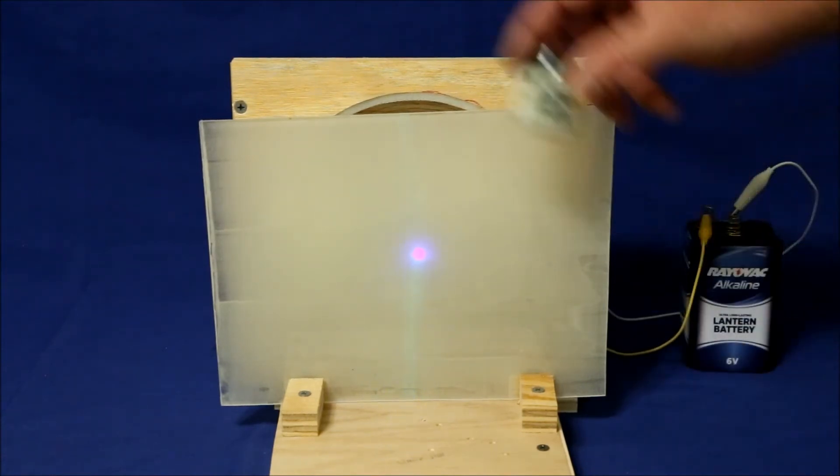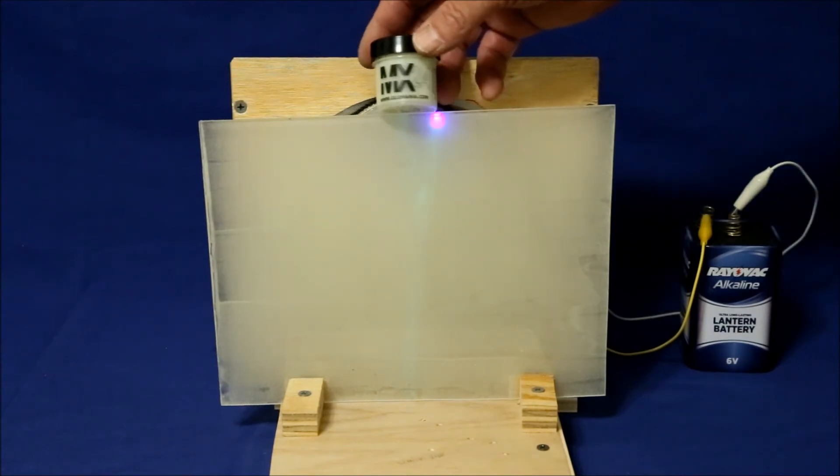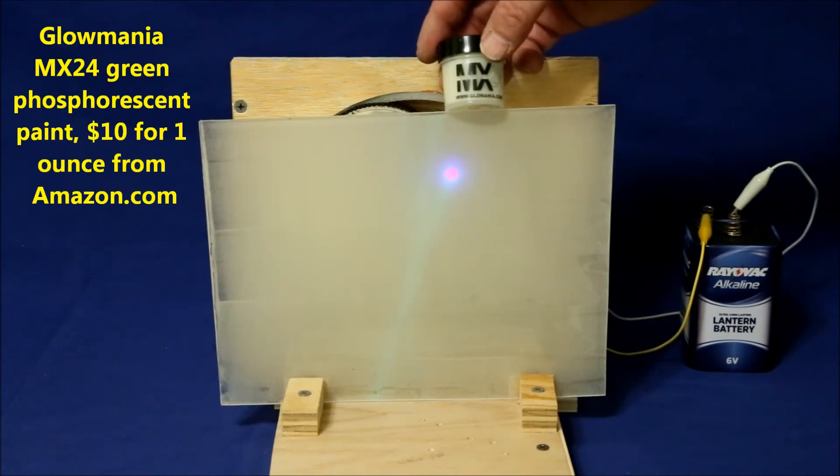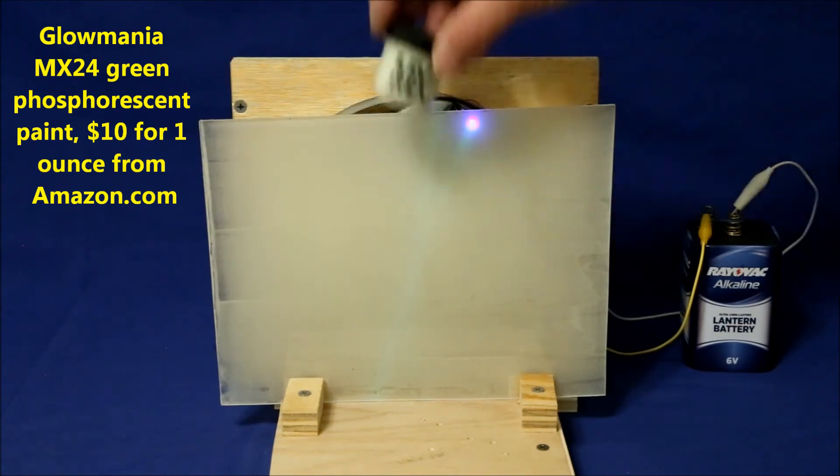The phosphorescent paint I used is MX24 by Glomania. I found this works really good. This one ounce bottle will cover a 10 inch by 8 inch sheet.